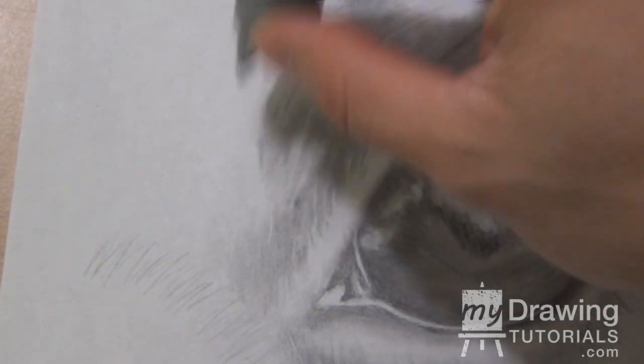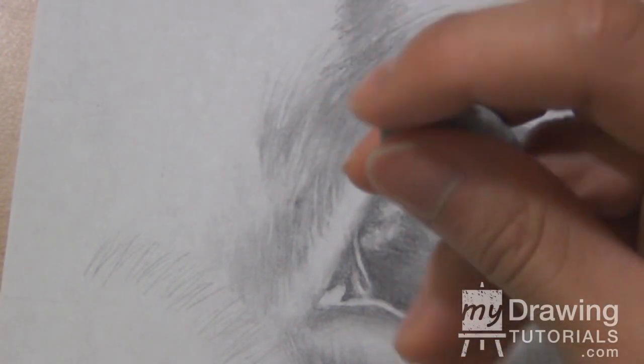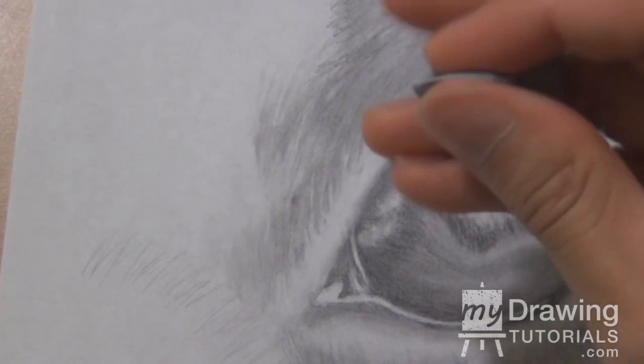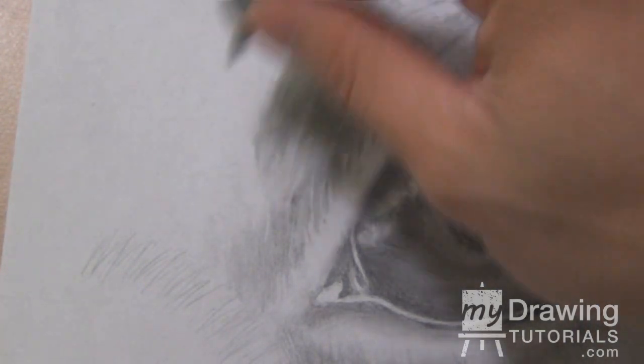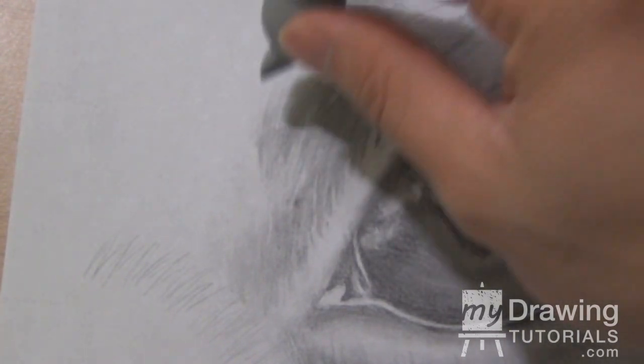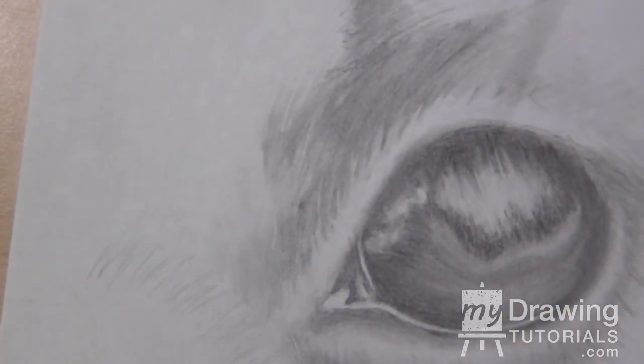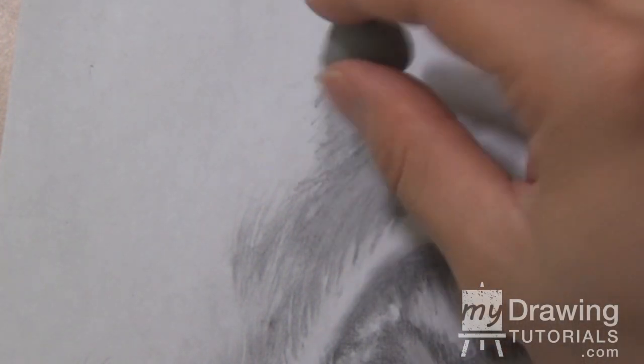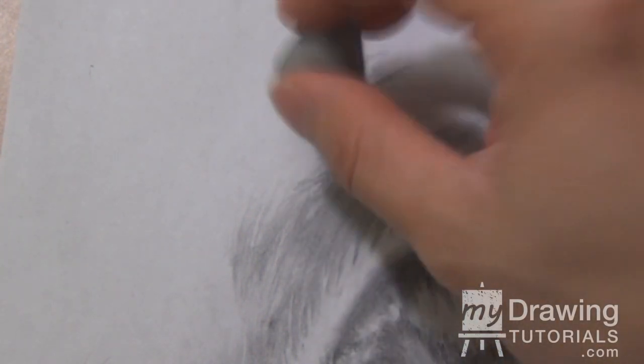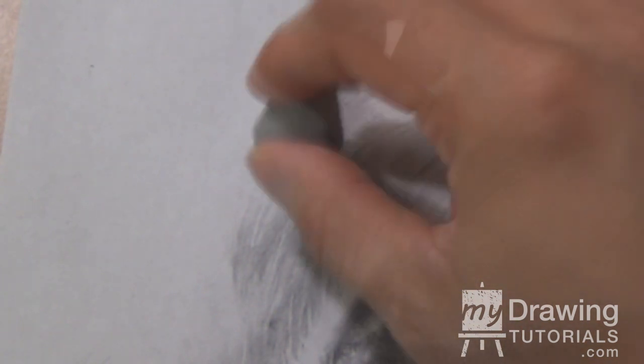I'm going to keep going with that kneaded eraser and as it gets dark I'm going to make a new edge and just sort of go up and create more of these white fur sticking into the darker area.